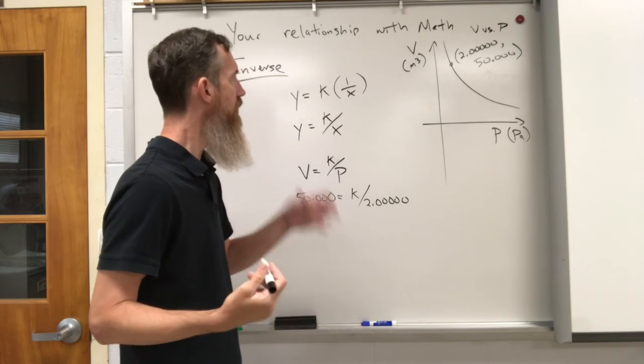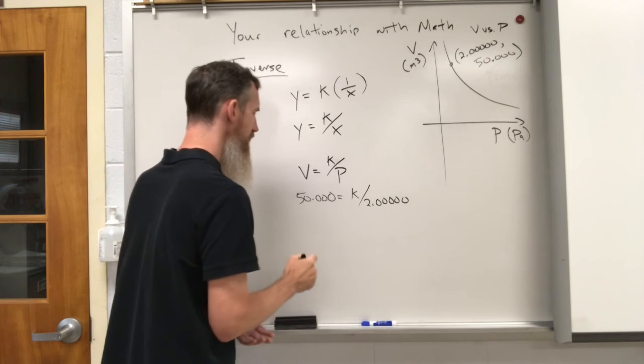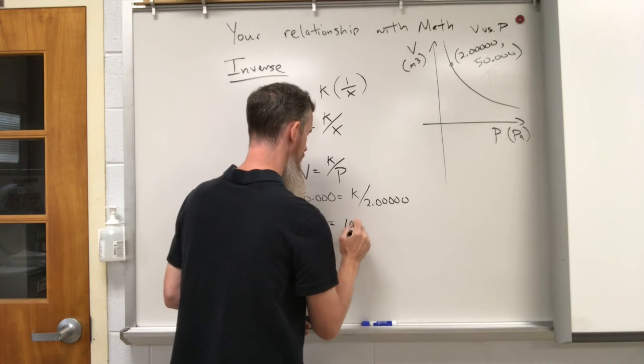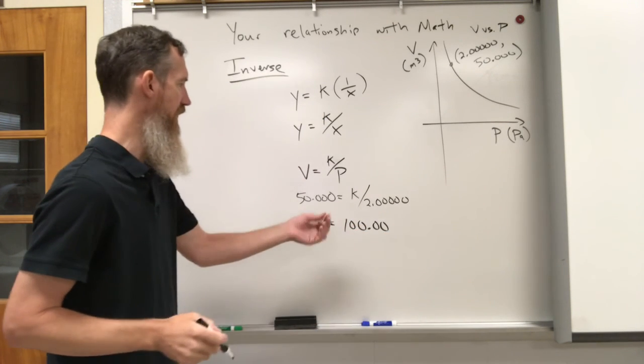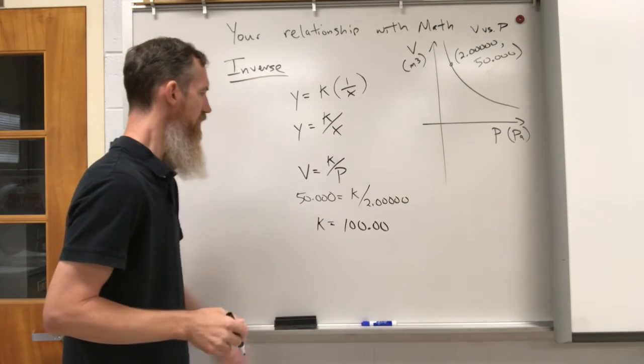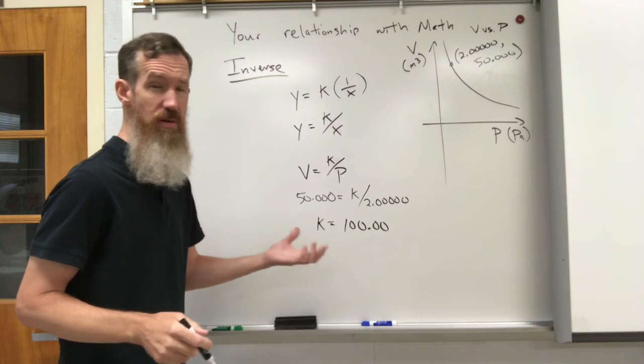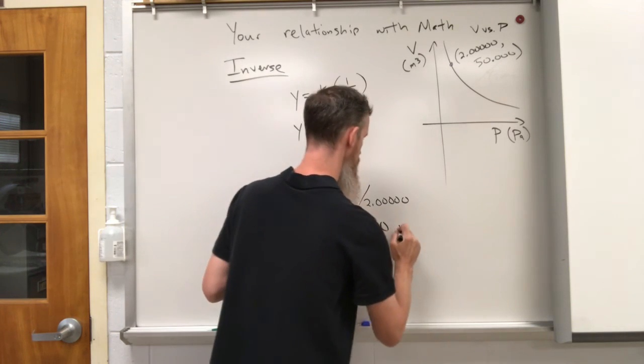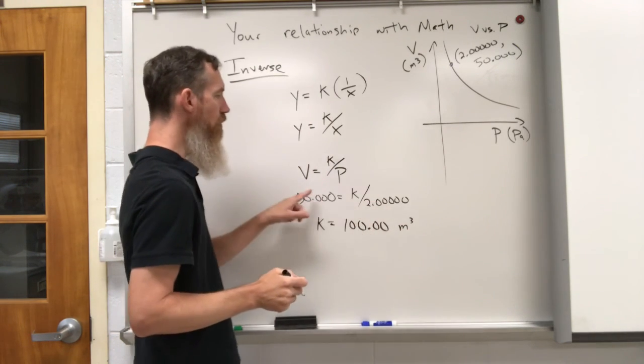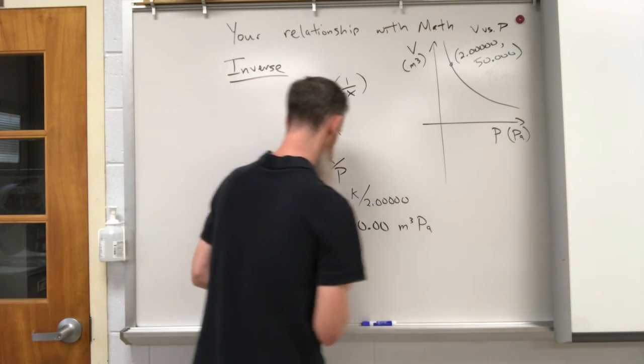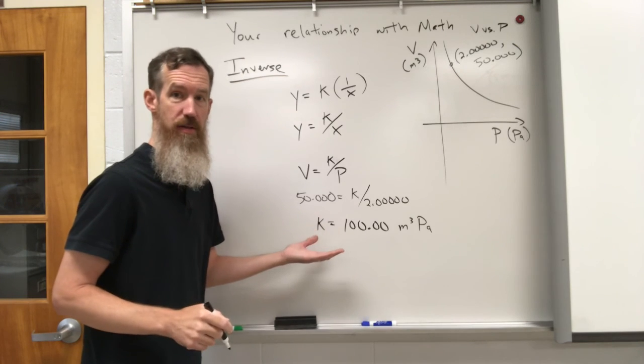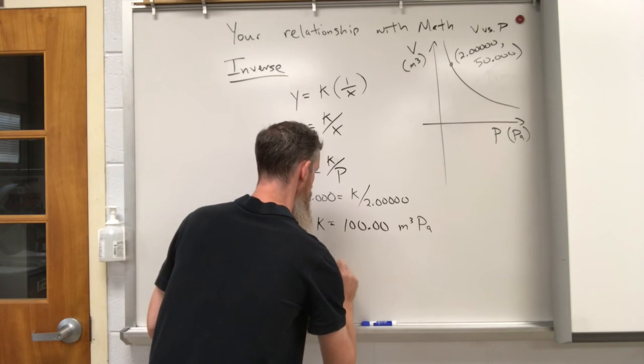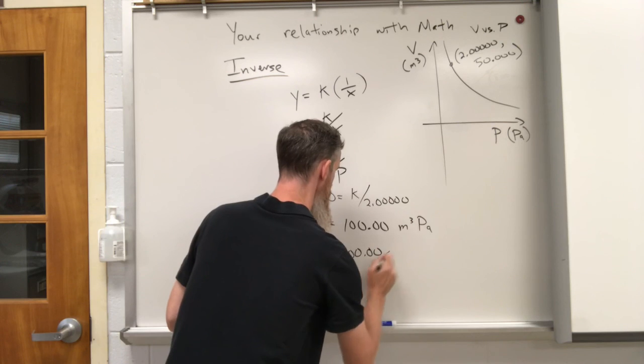If we take these values and plug them in, we have 50.000 equals k over 2.000. Now I can apply the units when I find my k value. It's pretty easy to see that my k value here is going to be equal to 100. I got to use five sig figs when I do that, because I have five here and six there. I also need to do the units to my k value. Volume was meters cubed, and then I'm going to multiply by pascals. So we have units on the k value there. And then I can finish up the equation. We can say v equals 100.00 divided by p. And there we go.